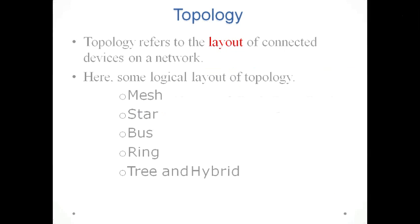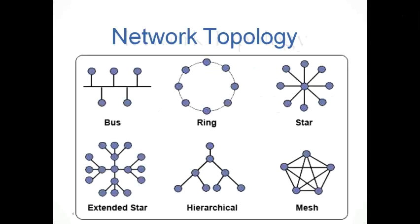In this session we are going to see about network topology in computer networks. Topology refers to the layout of connected devices on a network. The logical layouts include mesh, star, bus, ring, tree, and hybrid topology. These are the pictorial representations of the topologies: bus, ring, star, extended star, hierarchy, and mesh.